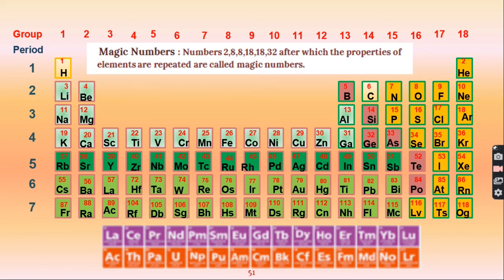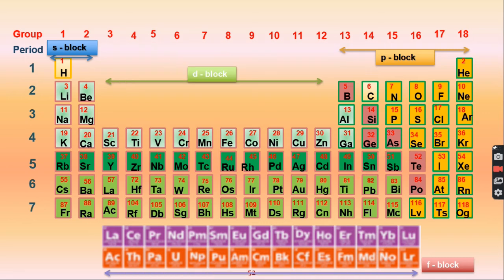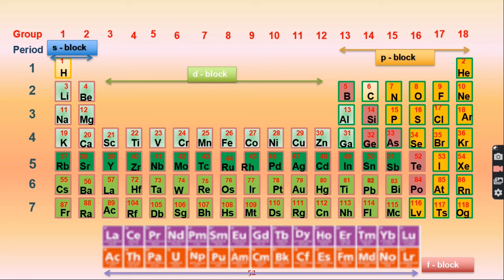The periodic table can be broadly classified into 4 categories based on electronic configuration. Electrons are present in shells which have sub-shells: S, P, D, and F. Group 1 and group 2 elements are called S-block elements. Groups 13 to 18 are called P-block elements. Groups 3 to 12 are called D-block elements. Lanthanides and actinides are called F-block elements.